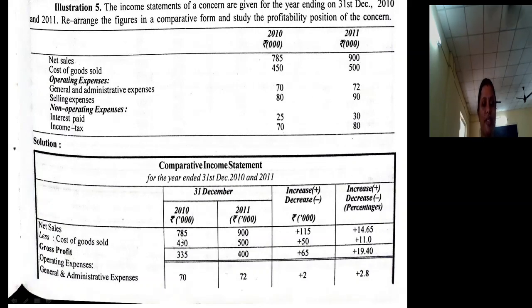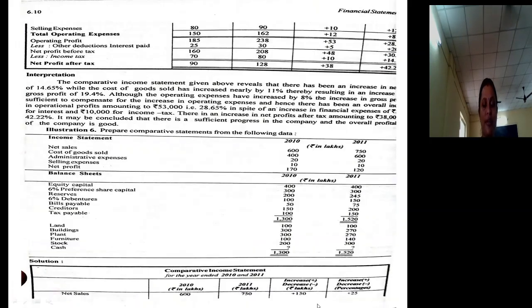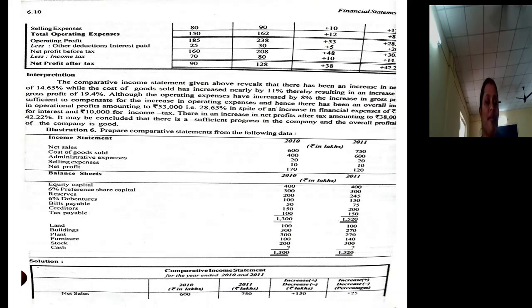Net sales is 785, in rupees thousands. So 785 minus cost of goods sold 450, as far as the first year is concerned. Second year it is 900 and 500. So we are having a gross profit of 335 and 400. We need to deduct operating expenses — general and administrative expenses, and selling expenses. 70 and 72, and selling expenses 80 and 90. We will arrive at total operating expenses. You need to first calculate total operating expenses, and then from gross profit deduct total operating expenses to arrive at operating profit.